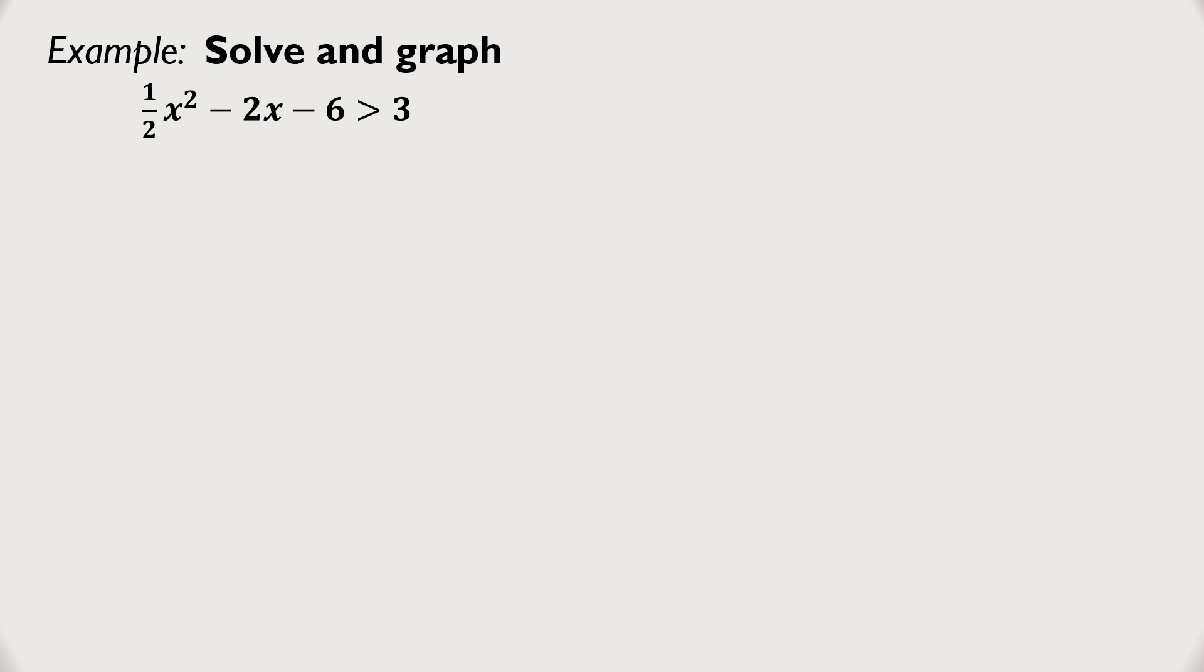Now let's solve and graph a quadratic inequality. We have one half of x squared minus 2x minus 6 is greater than 3. Following the steps from earlier, first we have to change the inequality to an equal sign. Now we have to solve that.